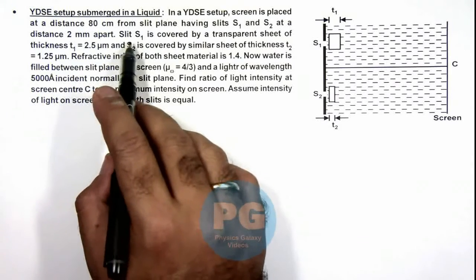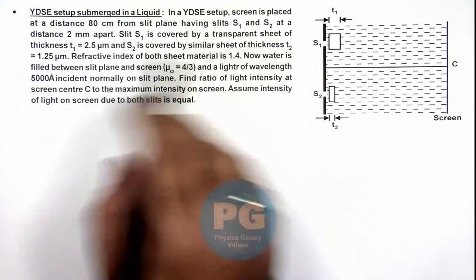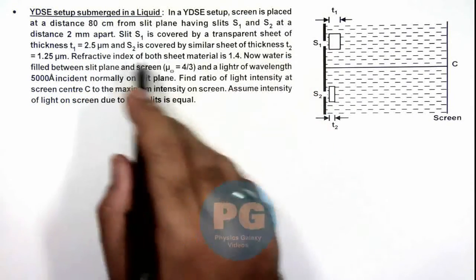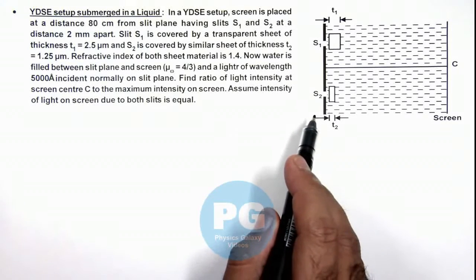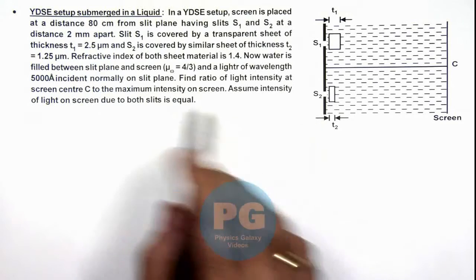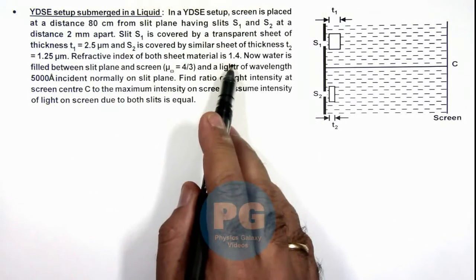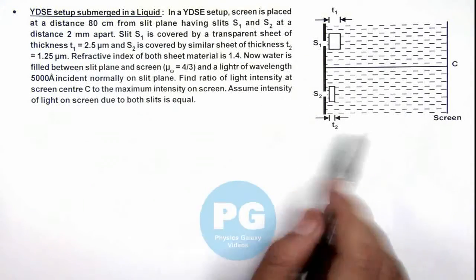Here we are given that slit S₁ is covered by a transparent sheet of thickness t₁ which is 2.5 micrometer, and another slit is covered by a similar sheet of thickness t₂ which is 1.25 micrometer. Refractive index of both of the sheet material is 1.4, and now water is filled between the slit plane and screen as we can see in this picture.